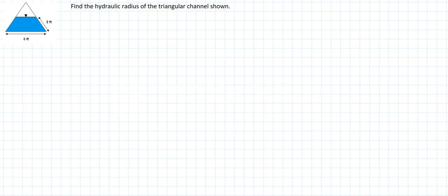In this problem we're asked to find the hydraulic radius of the triangular channel that's shown on the left. The first thing I should mention is that this is an equilateral triangle, so all sides are equal and the angles are all equal to 60 degrees.